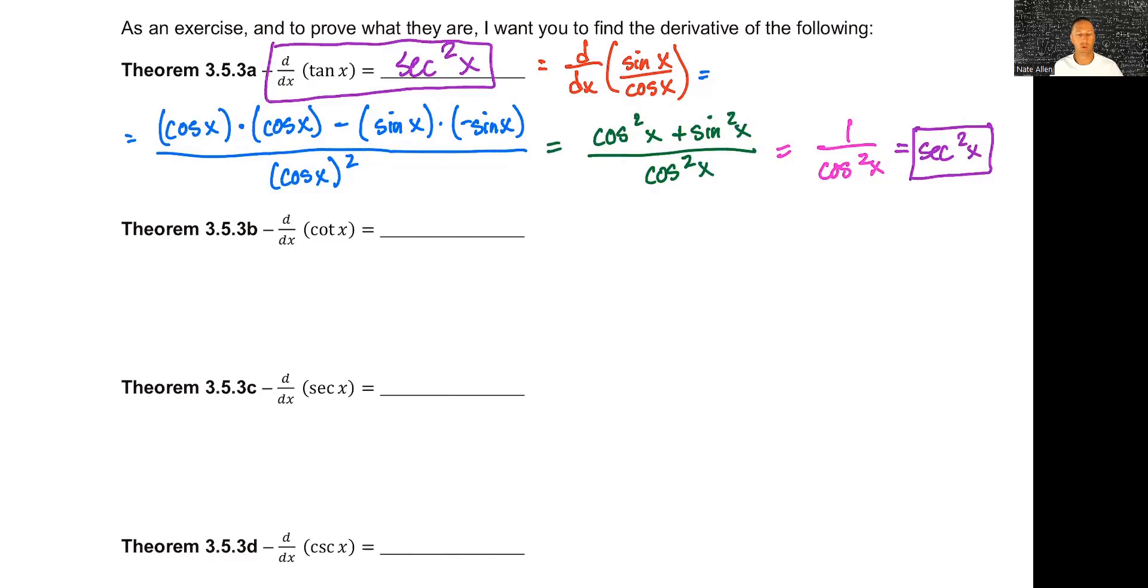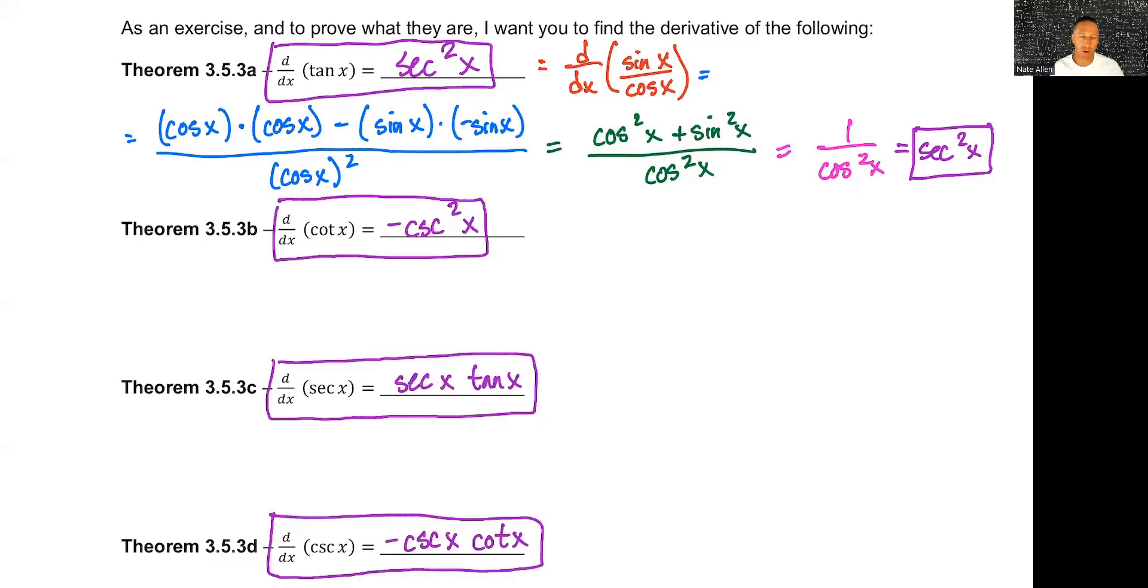Go ahead and try that for the rest of these if you'd like, rewriting cotangent as cosine over sine, secant as one over cosine, and cosecant as one over sine, and just using a quotient rule instead of trying to do the limit definition.